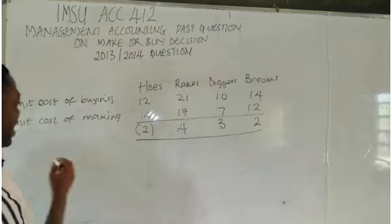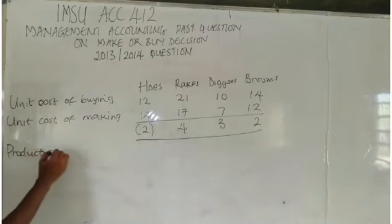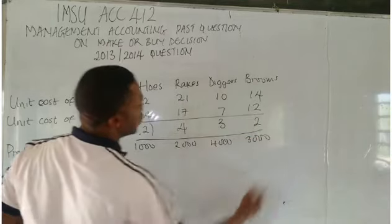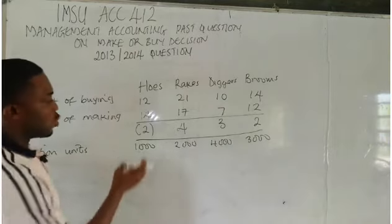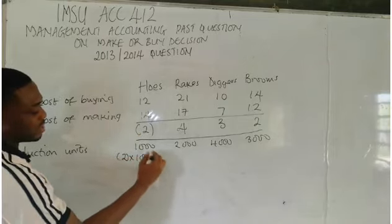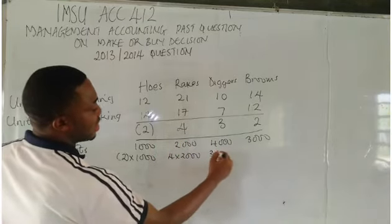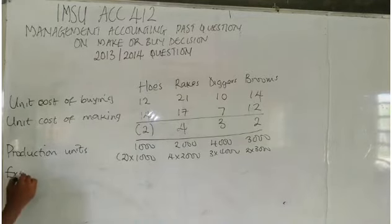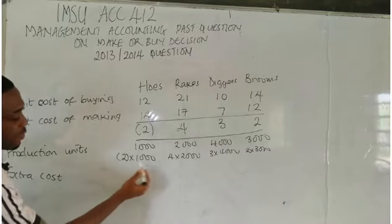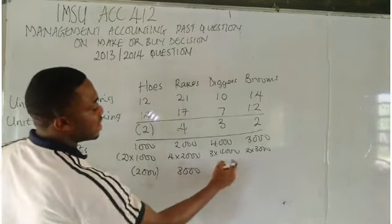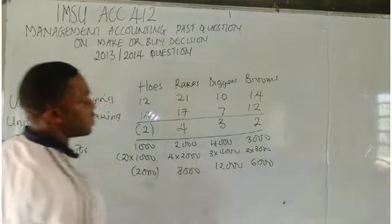The next step is to write down the production units — the quantity they want to produce for each component. From the question: holes = 1,000, rigs = 2,000, diggers = 4,000, and brooms = 3,000. We then multiply the cost difference by the total number of units: negative 2 × 1,000; positive 4 × 2,000; 3 × 4,000; and 2 × 3,000. This gives the extra cost figures: 2,000; 8,000; 12,000; and 6,000.